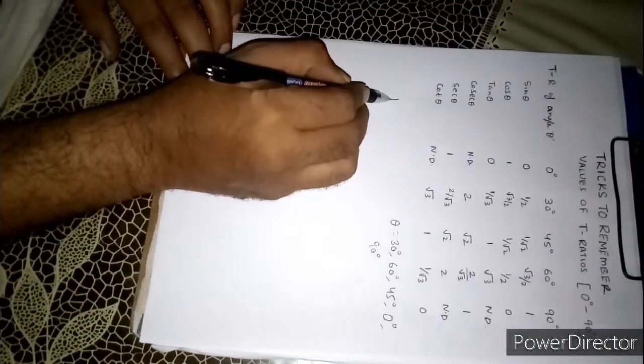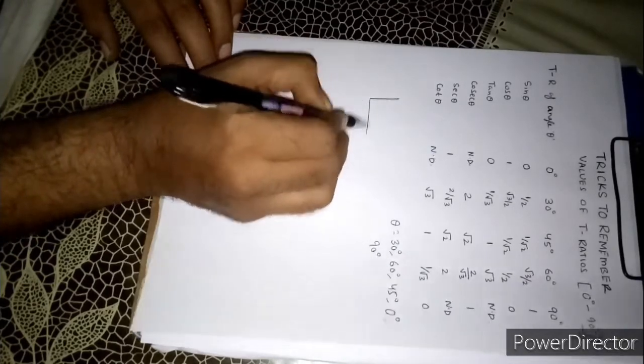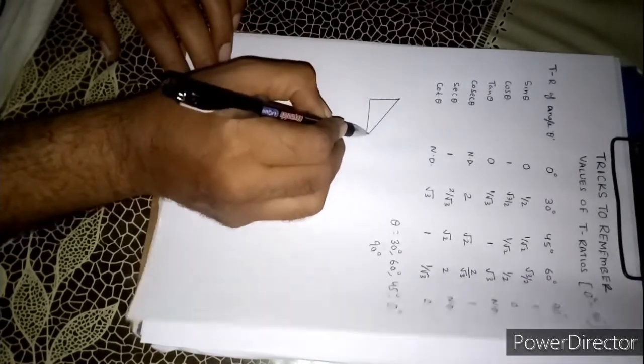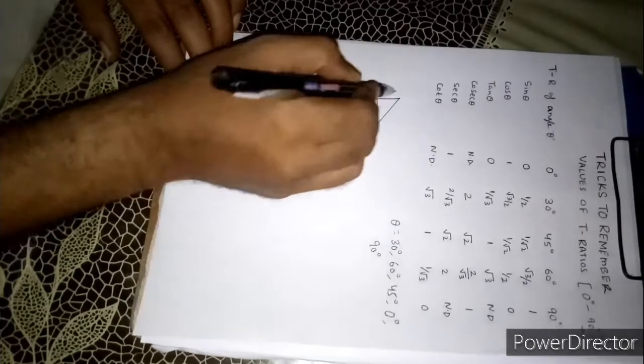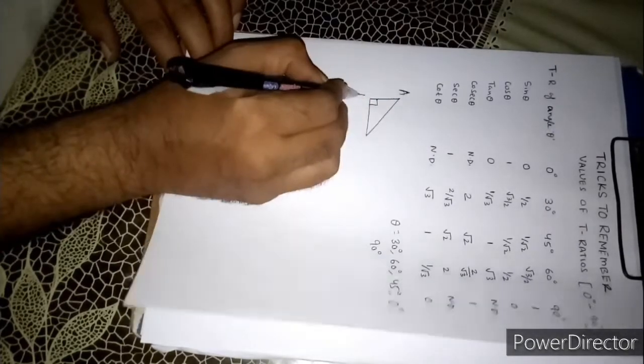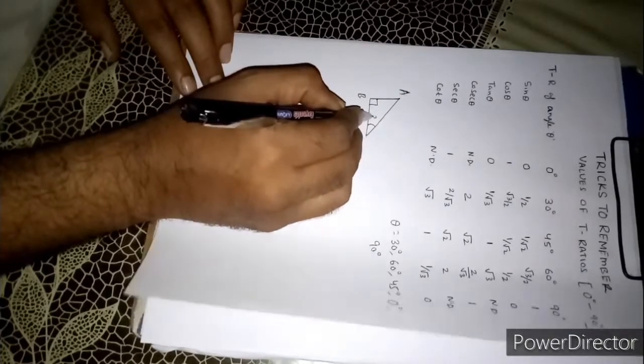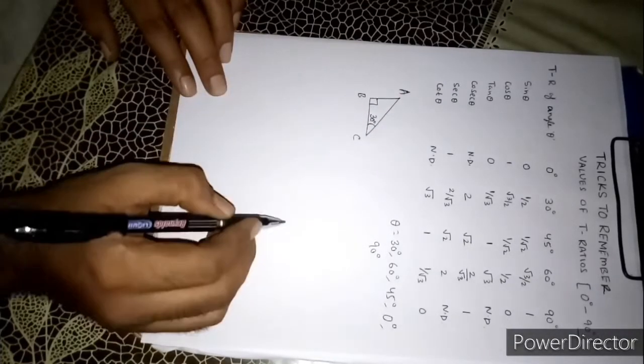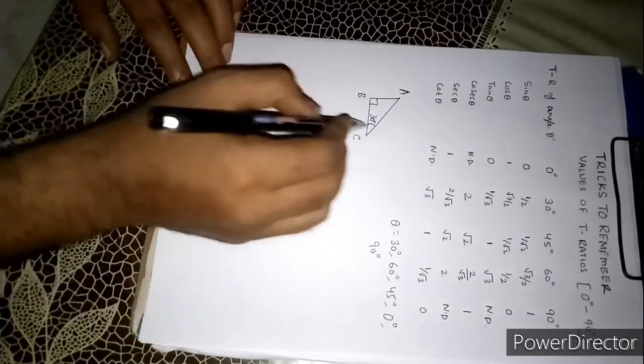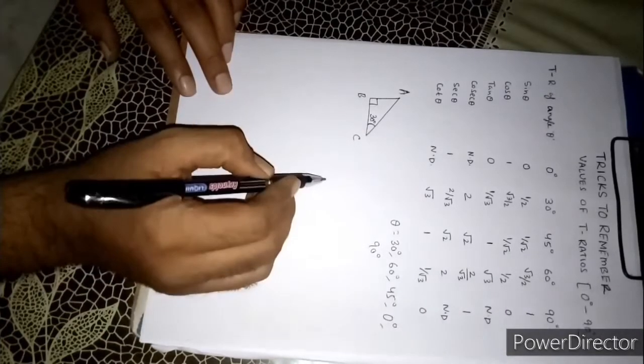For example, if you consider a right angle triangle, you can give it the name ABC and suppose here angle is 30 degree. Angle of inclination is 30 degree.